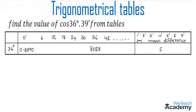That gives 0.8258 as the value for sin 55 degrees 40 minutes. Now let us proceed to one more example. The given example is: find the value of cos 36 degrees and 39 minutes from the tables, using the table of natural cosines.